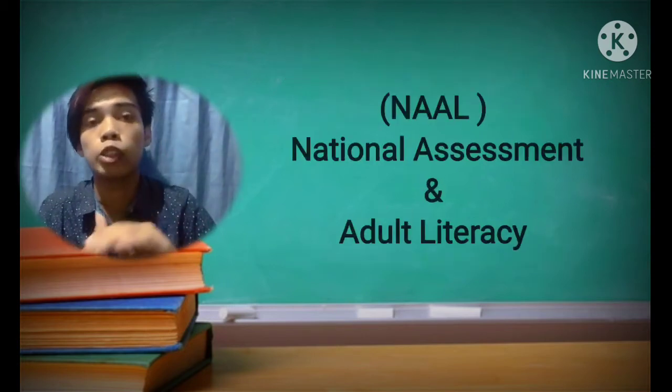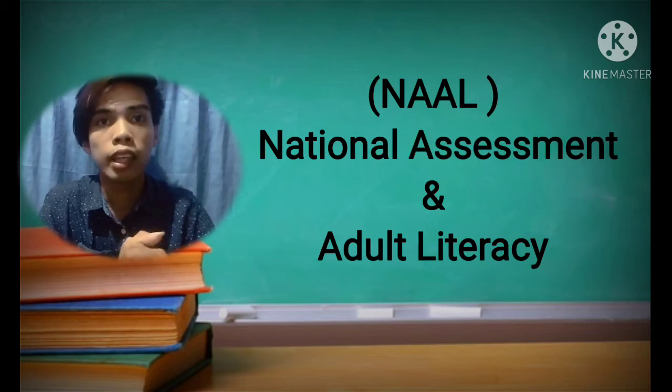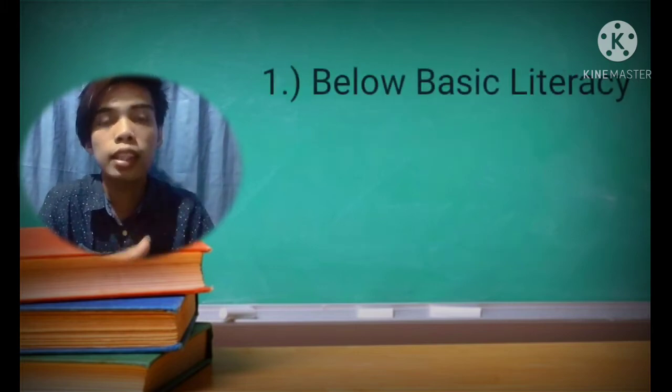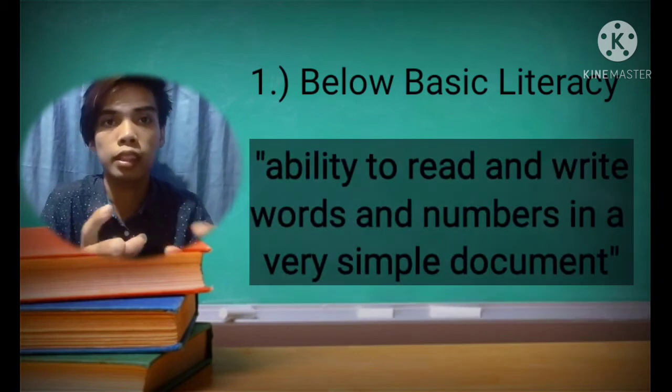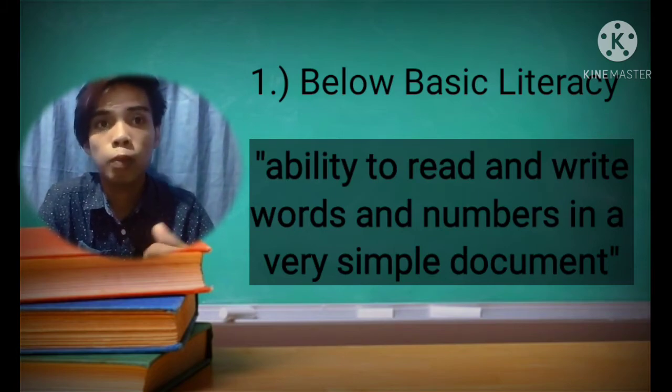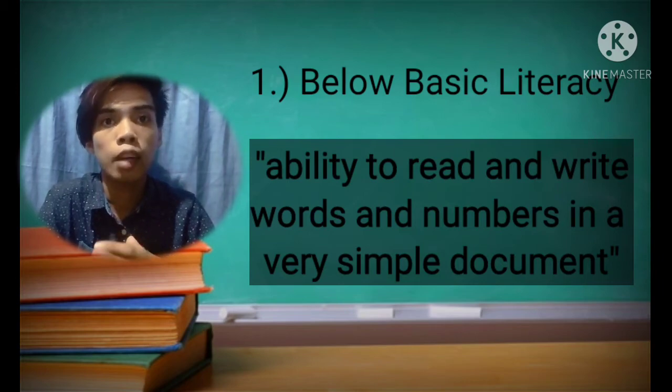According to NAAL, the National Assessment of Adult Literacy, there are four levels of functional literacy. First is below basic, which allows learners to read and write words and numbers in very simple documents. Examples include identifying information on a chart, signing a form, or adding a dollar amount to a deposit slip.